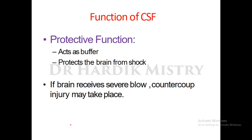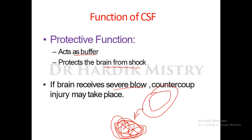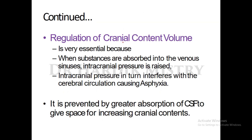Functions of CSF: it has a protective function — it acts as a buffer and protects the brain from shock. If the brain receives a severe blow, a contrecoup injury may occur. For example, when the skull strikes a hard surface, the brain moves to the opposite side. The injury is therefore present on the opposite portion of the impact — this is the contrecoup injury.